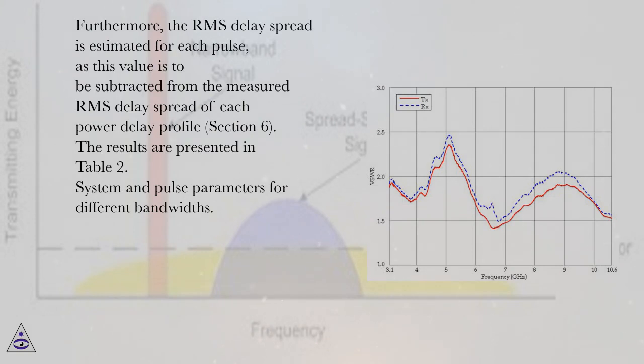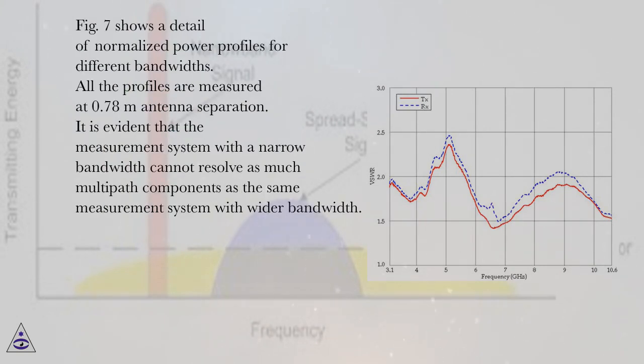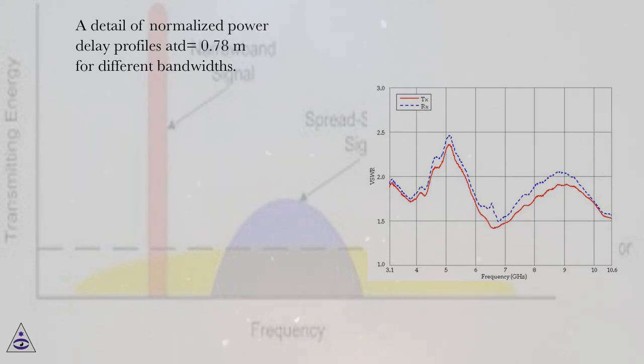System and pulse parameters for different bandwidths. Figure 7 shows a detail of normalized power profiles for different bandwidths. All the profiles are measured at 0.78 m antenna separation. It is evident that the measurement system with a narrow bandwidth cannot resolve as much multipath components as the same measurement system with wider bandwidth.